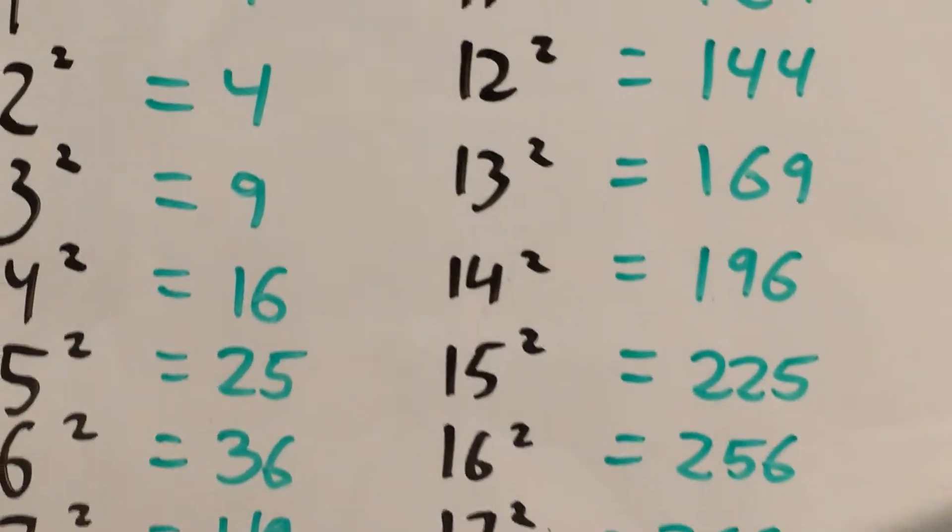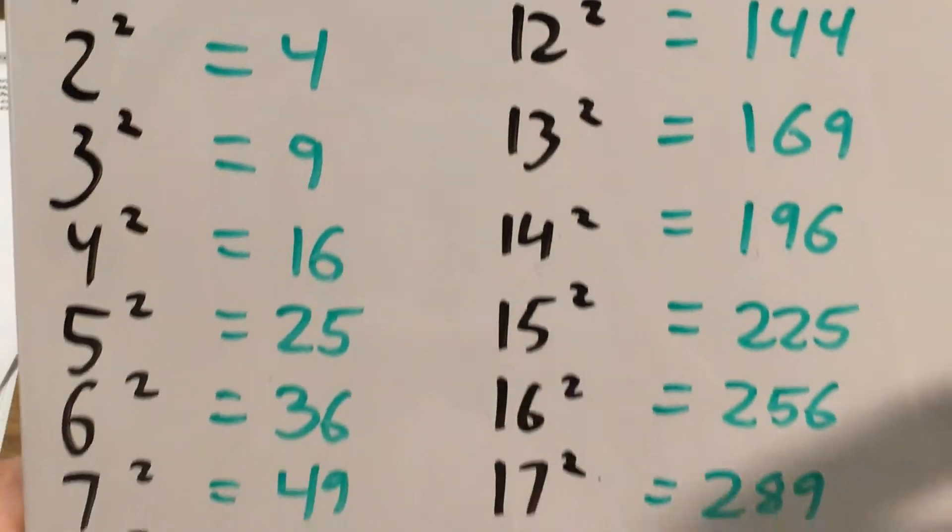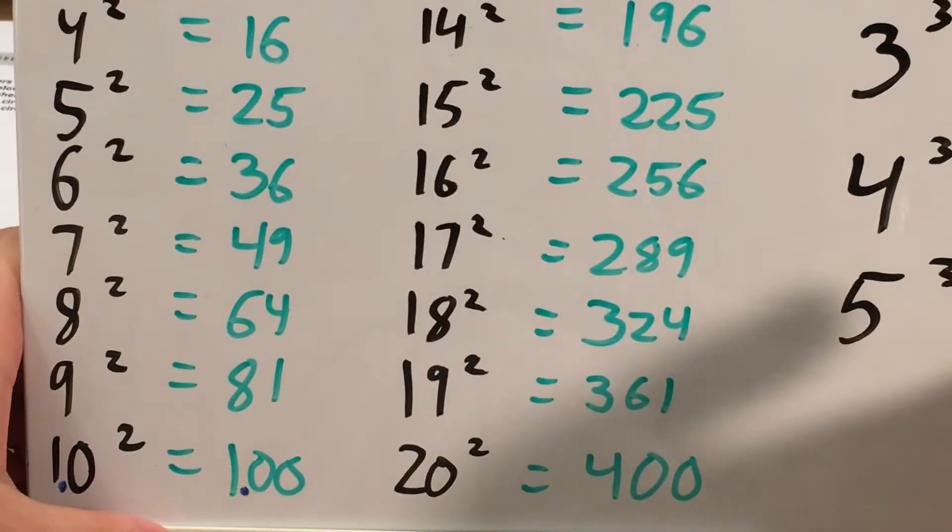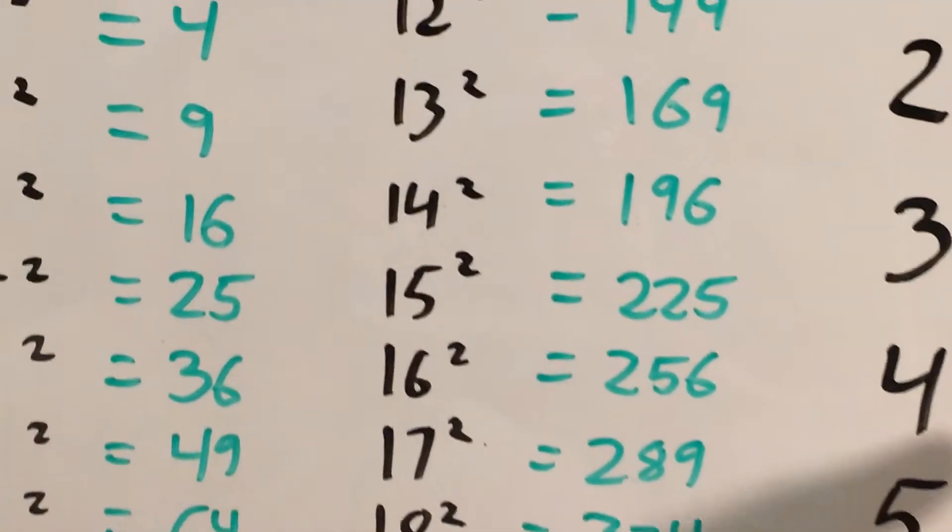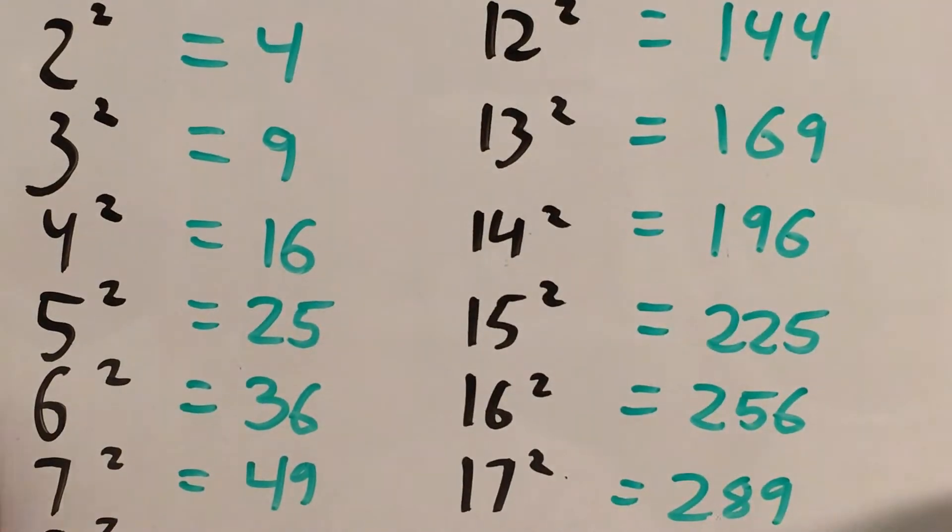And as you can see, I've got all the square numbers here from 1 down to 20 and even some cube numbers that we needed for the last problem, number 14.